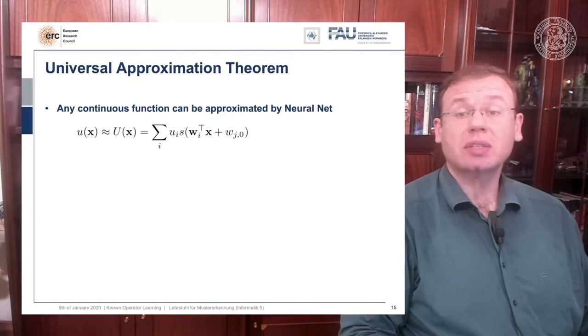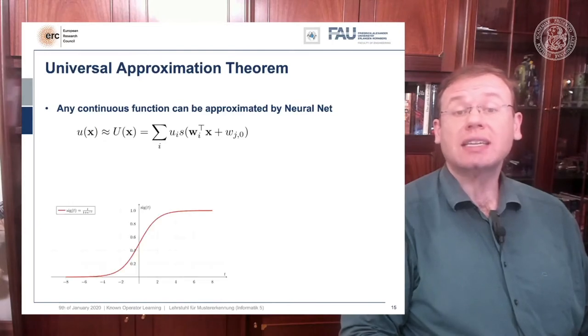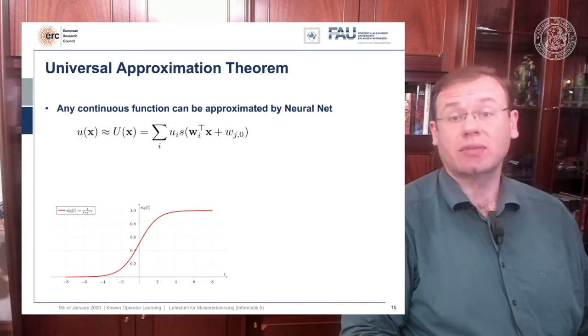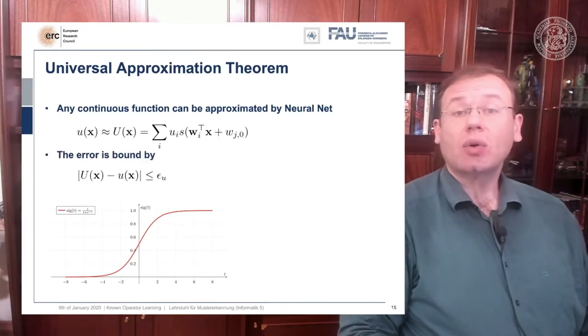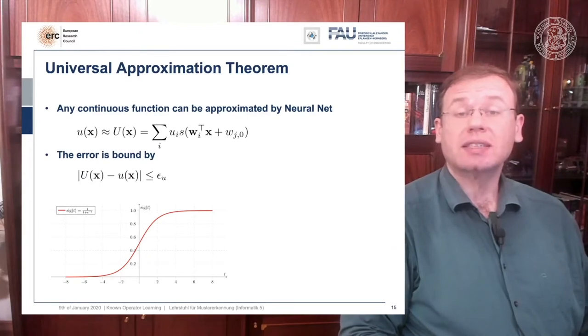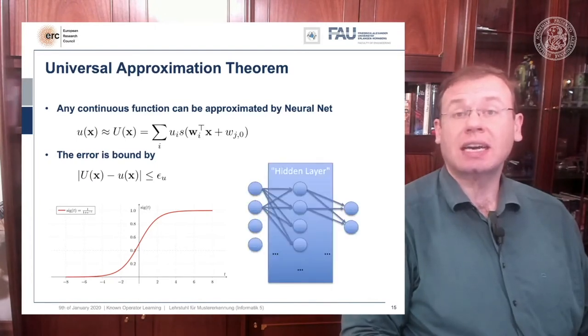We know that there is a bound epsilon U, and epsilon U tells us the maximum difference between the original function and the approximated function, and this is exactly one hidden layer neural network. Well this is nice, but we are not really interested in one hidden layer neural networks, right?